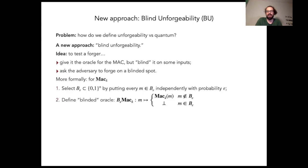More formally, we define a set B epsilon, which is a random subset of the message space, and each message is put into the set with independent probability epsilon. Now we define the blinded MAC oracle by sending every message to its corresponding tag if the message is not in the blinding set, but by returning the bottom symbol if the message is in the blinding set.